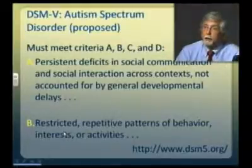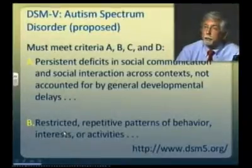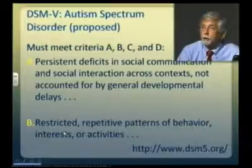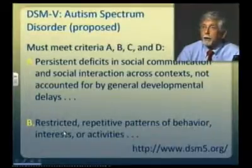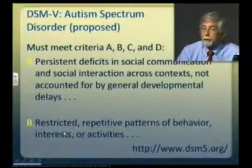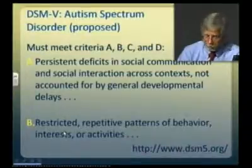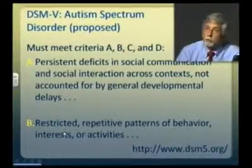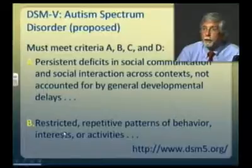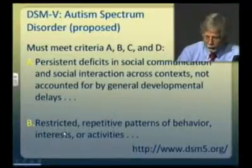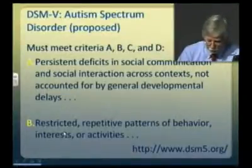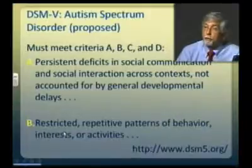The DSM-5 criteria include, first, that a child has persistent deficits in social communication and social interaction across contexts that are not accounted for by general developmental delays. Secondly, that the child displays restricted repetitive patterns of behavior, interests, or activities. Under each of these criteria there is considerable elaboration in the DSM definition, and I would refer you to DSM-5.org for more detail.